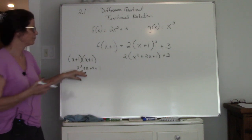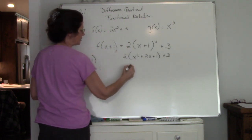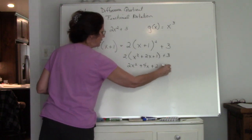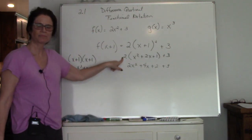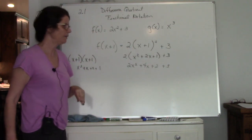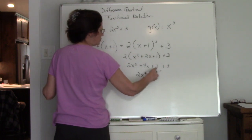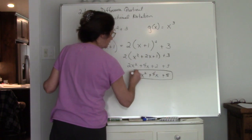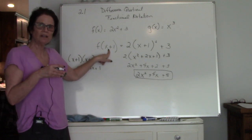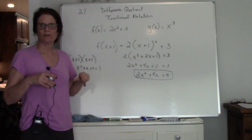So x plus 1 squared equals x squared plus 2x plus 1. Now multiply the 2 through: 2 times x squared is 2x squared, 2 times 2x is 4x, 2 times 1 is 2 — and then the plus 3 is outside the parentheses, so it's not multiplied by 2. Combining: 2x squared plus 4x plus 2 plus 3, and 2 plus 3 is 5. So f(x+1) equals 2x squared plus 4x plus 5.